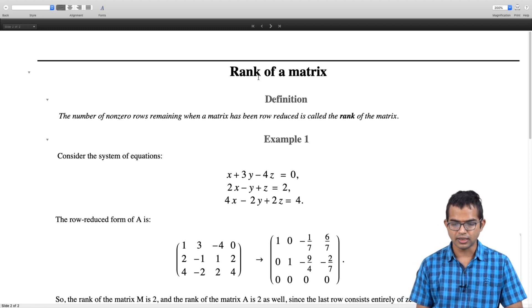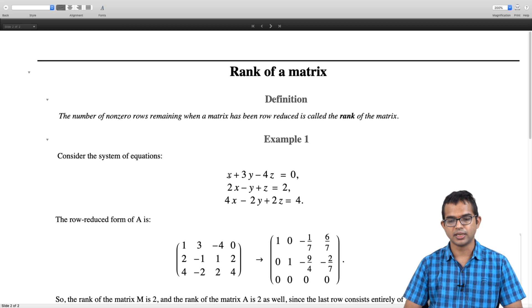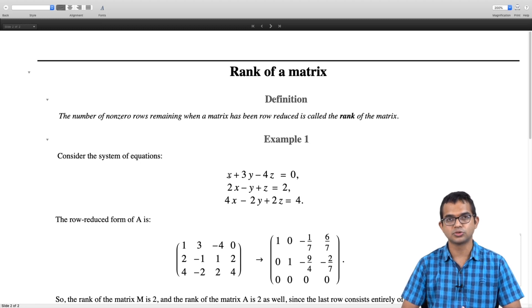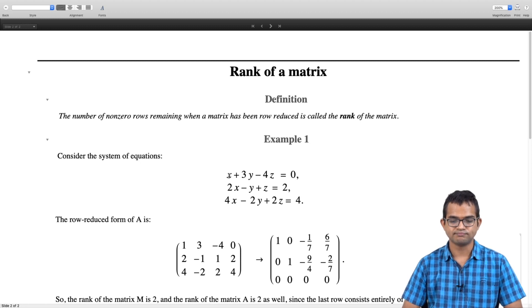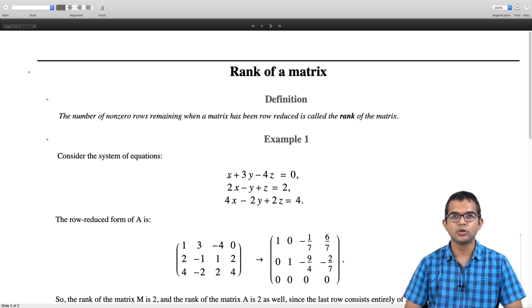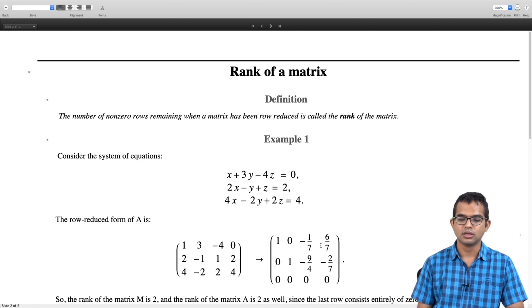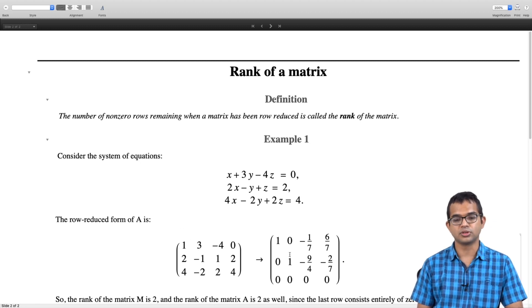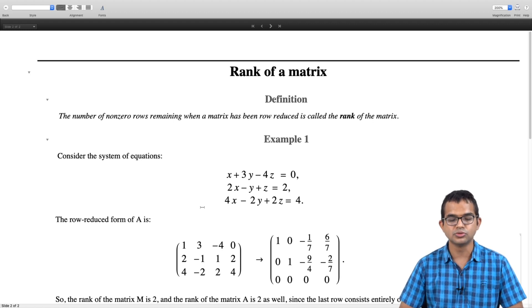Let us look at an example. We have the system of equations: x + 3y - 4z = 0, 2x - y + z = 2, 4x - 2y + 2z = 4. How would we go about doing this row reduction? Let us quickly recall what we would do in this case. I am not showing you all the steps involved. We start by writing this augmented matrix. So I have (1 3 -4 0), (2 -1 1 2), (4 -2 2 4).